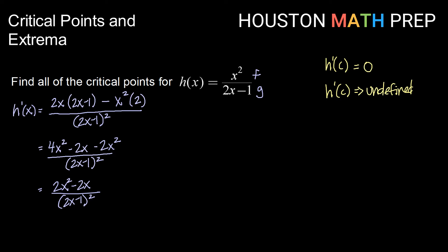we can find locations where h prime is equal to 0 by setting our numerator equal to 0. So 2x squared minus 2x equals 0.